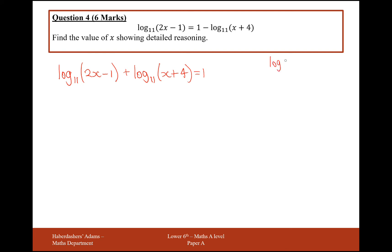Now we're going to use the law of logs. When you add two logs together, you can combine them by multiplying the values inside the logs. So it's going to be log base 11 of [(2x - 1)(x + 4)] equals 1. We've just simplified the left-hand side.